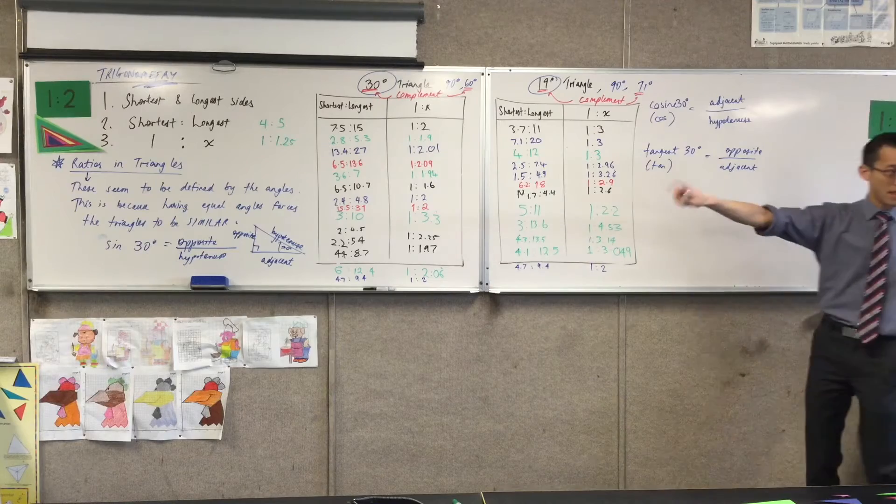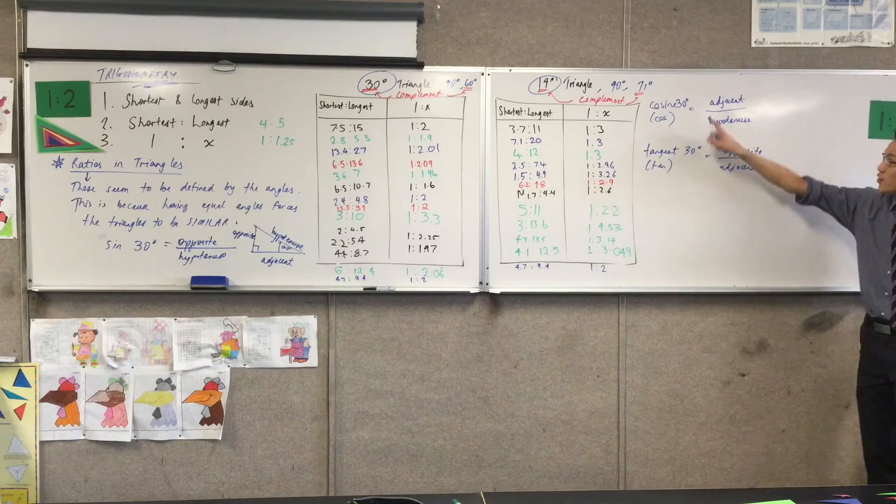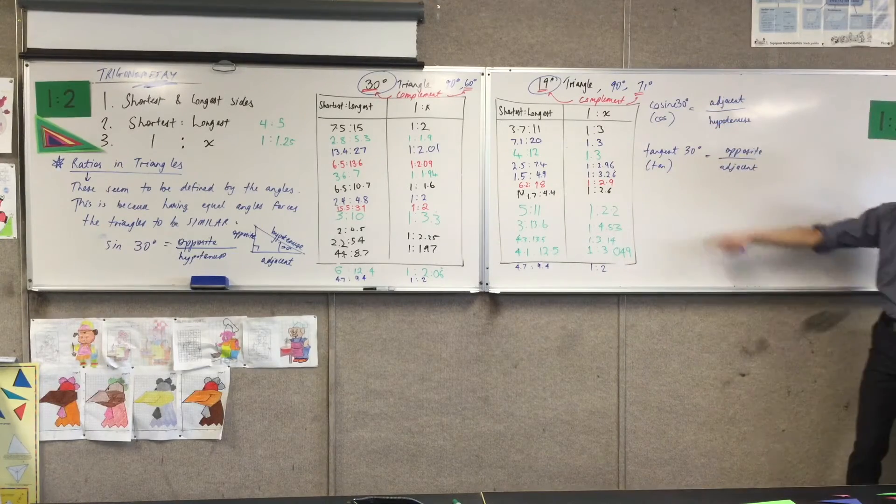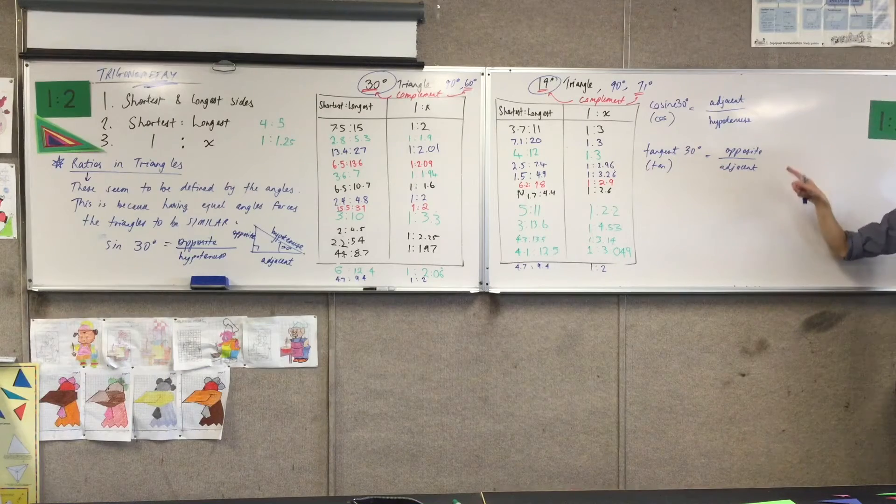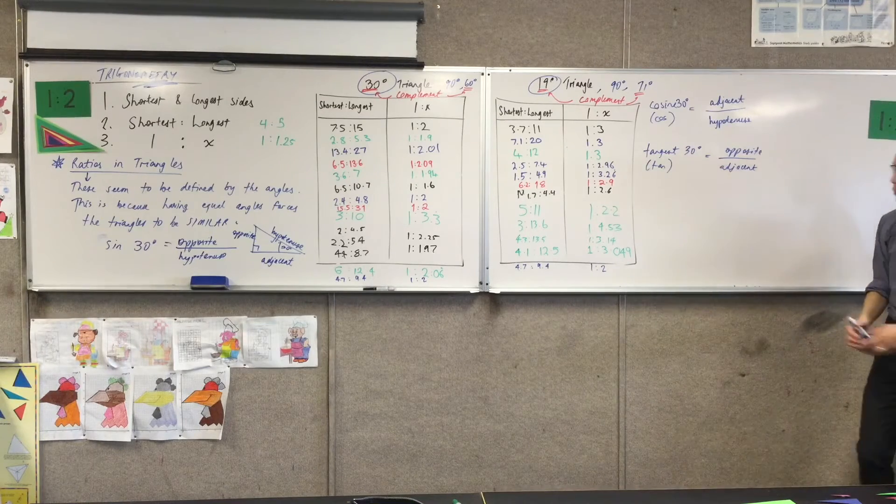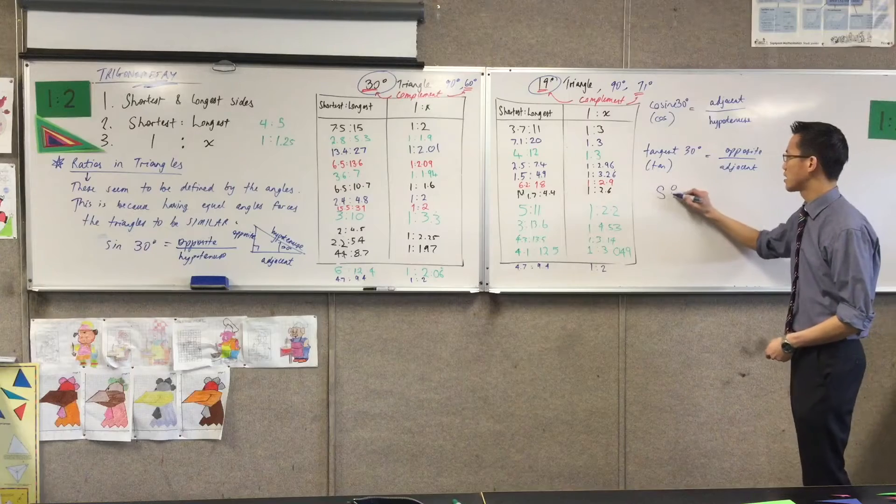So can you see? You've got sine, opposite over hypotenuse. Cosine, adjacent over hypotenuse. And tan, which is opposite on adjacent. So we have an acronym to remember this. I don't know if you've seen it written like this before.